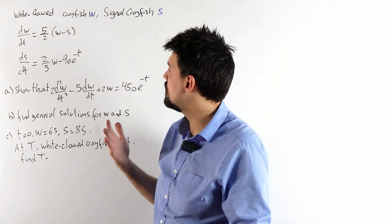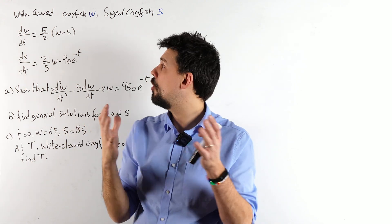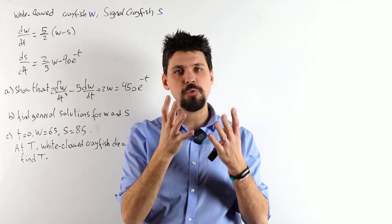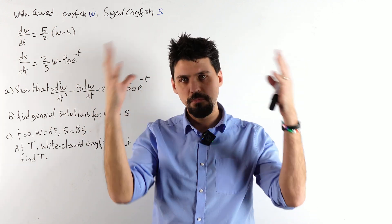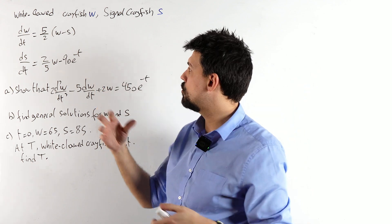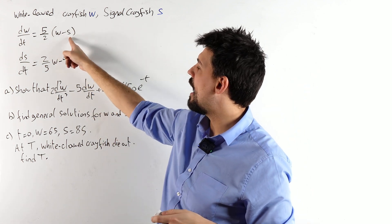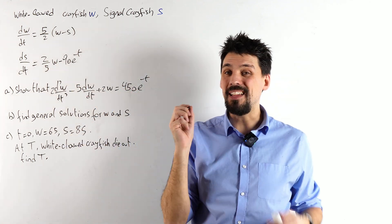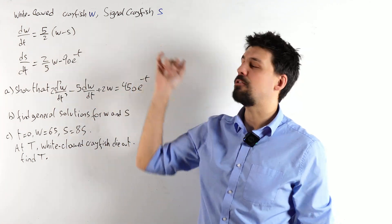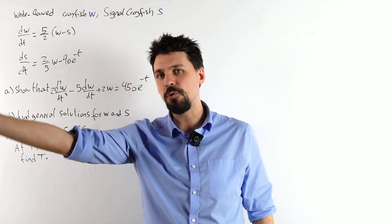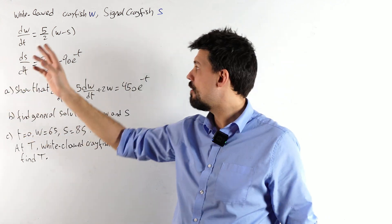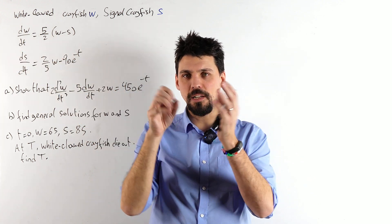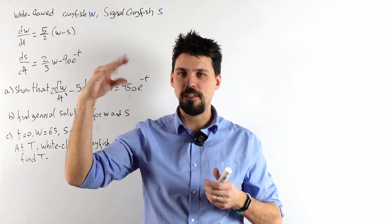dW/dt increases — which makes sense. More white-clawed crayfish means the more they can reproduce, the faster that population will grow. However, minus S — what does that tell me? It tells me that the signal crayfish eat the white-clawed crayfish. The more of them there are, the slower W increases. So the W's are making little babies and the S's are eating them.